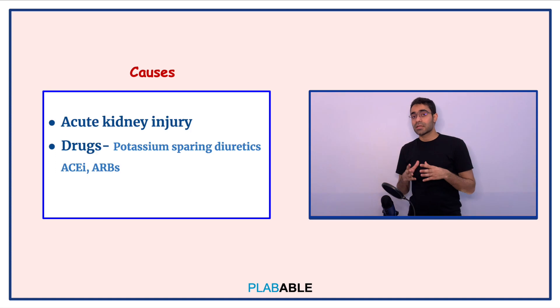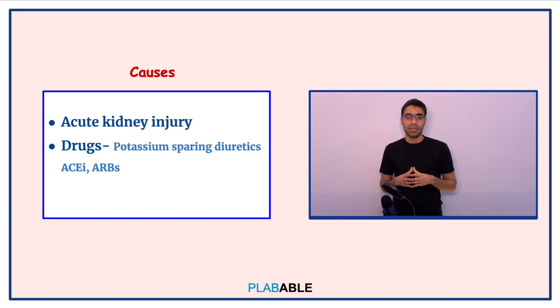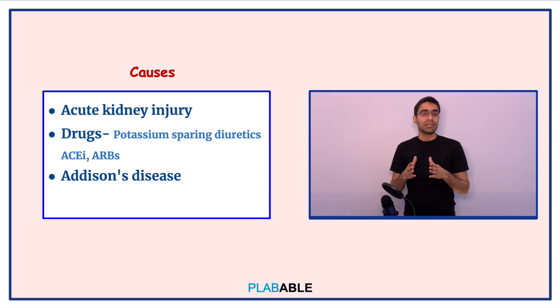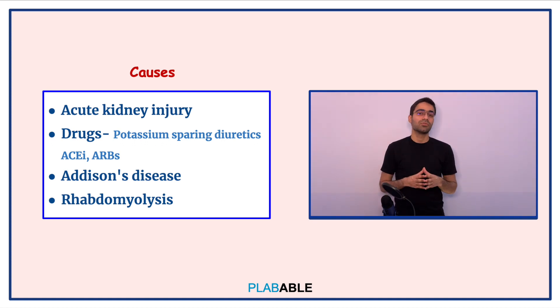Other causes include drugs like potassium-sparing diuretics, ACE inhibitors, ARBs because they decrease aldosterone thereby causing hyperkalemia. Endocrine causes like Addison's disease where there is decreased mineralocorticoid activity or rhabdomyolysis where there is muscle breakdown which leads to increased potassium into the serum.